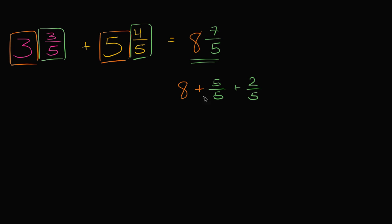Now why is that interesting? Because five-fifths, notice five-fifths plus two-fifths, that's seven-fifths right over there. Or you can consider five-fifths to be one. So this is eight plus one, which is nine and two-fifths.